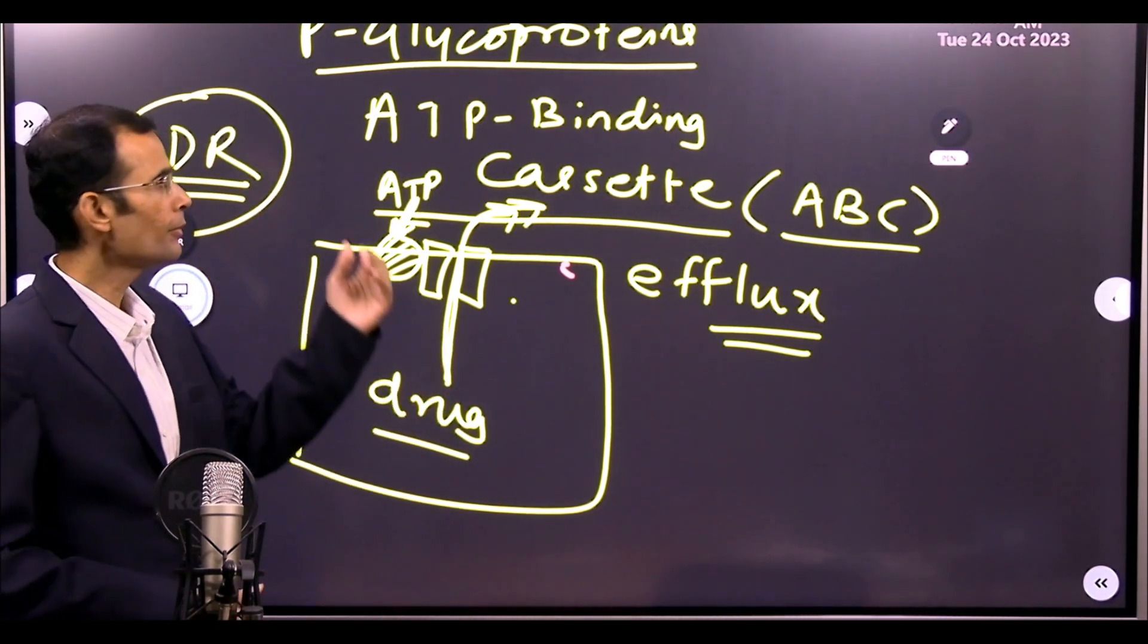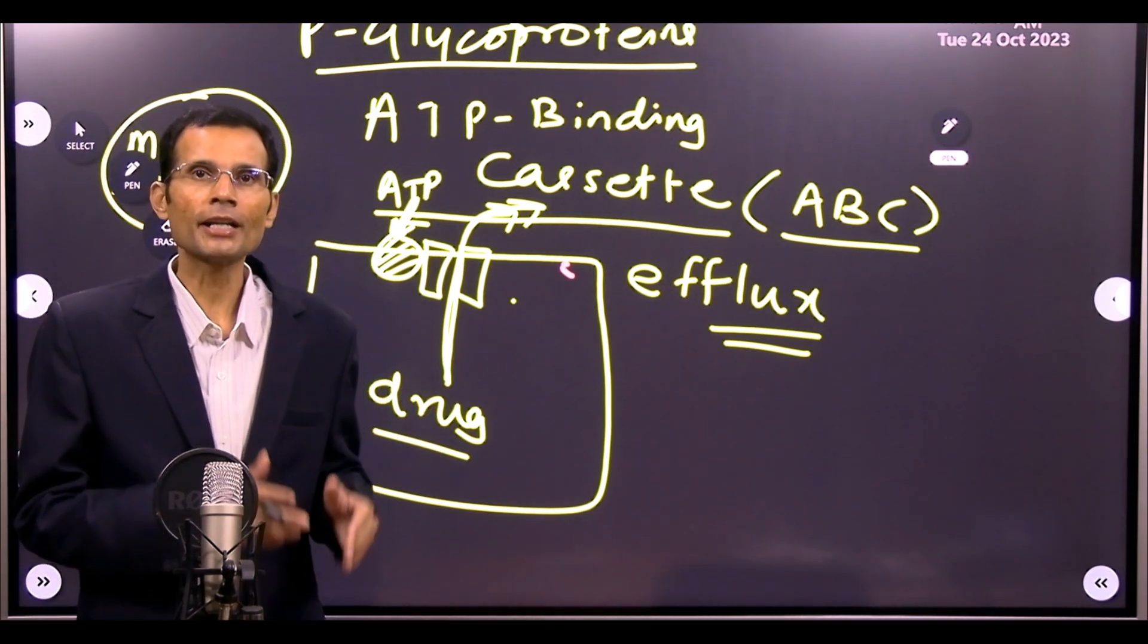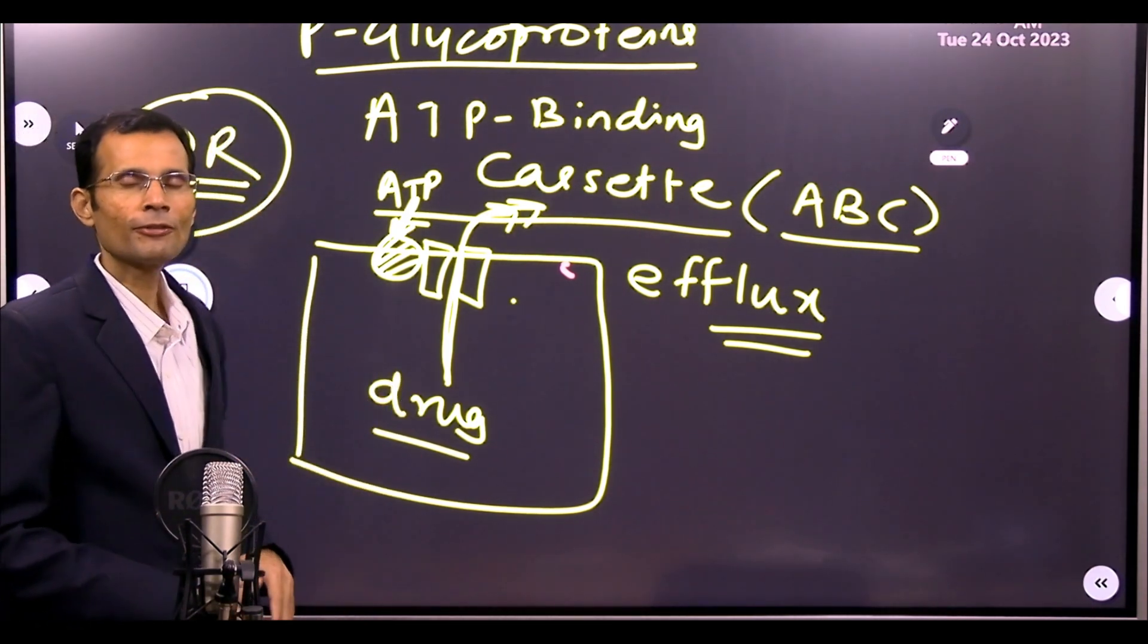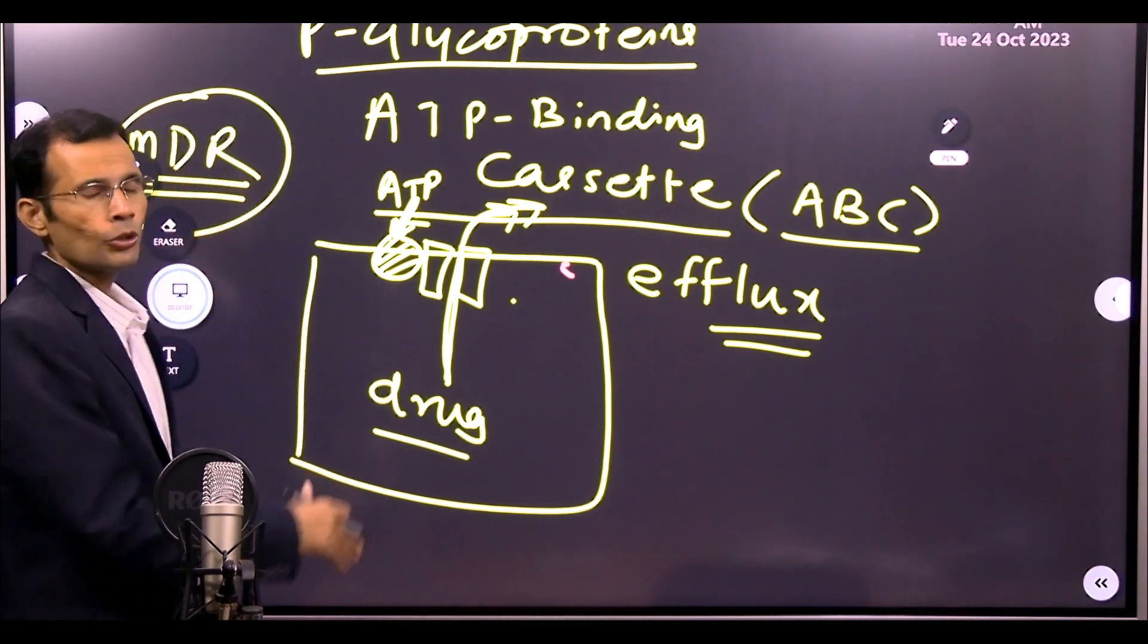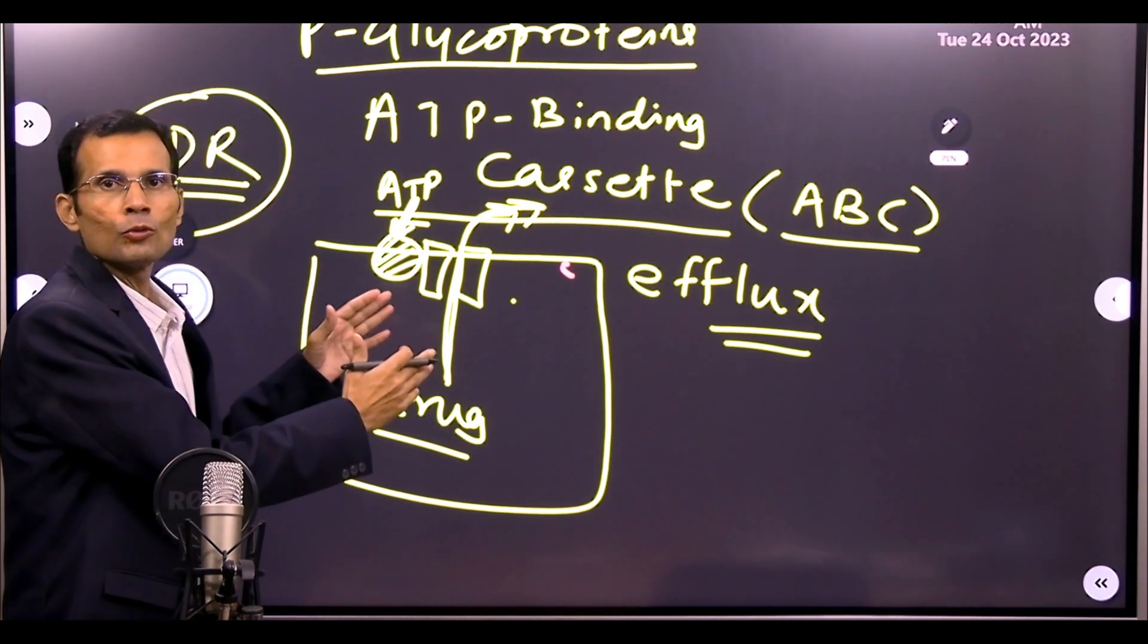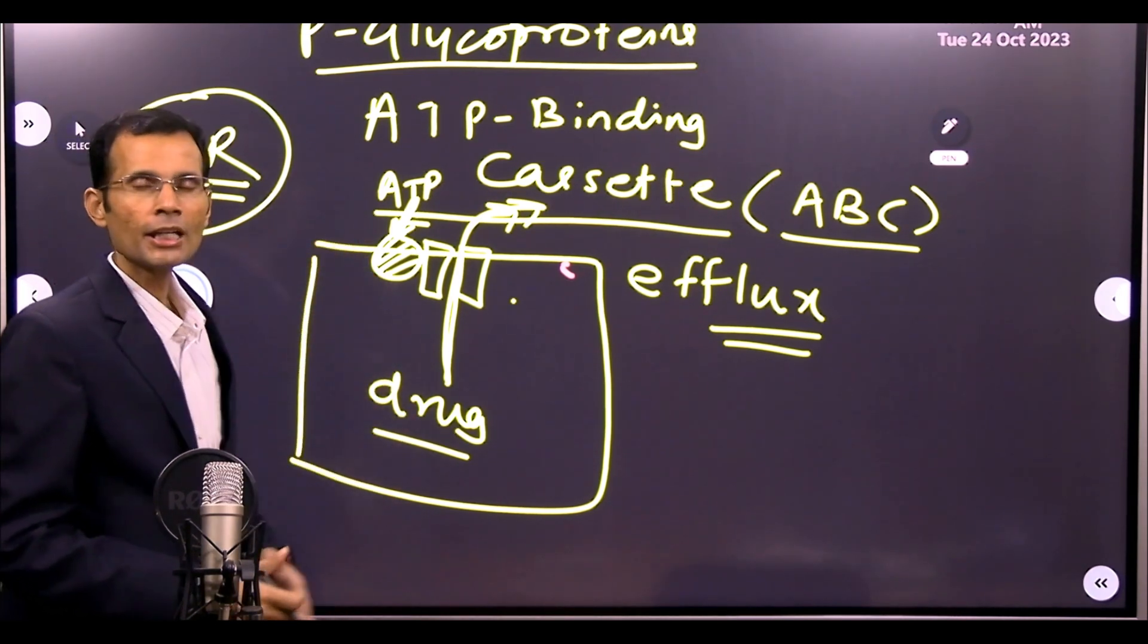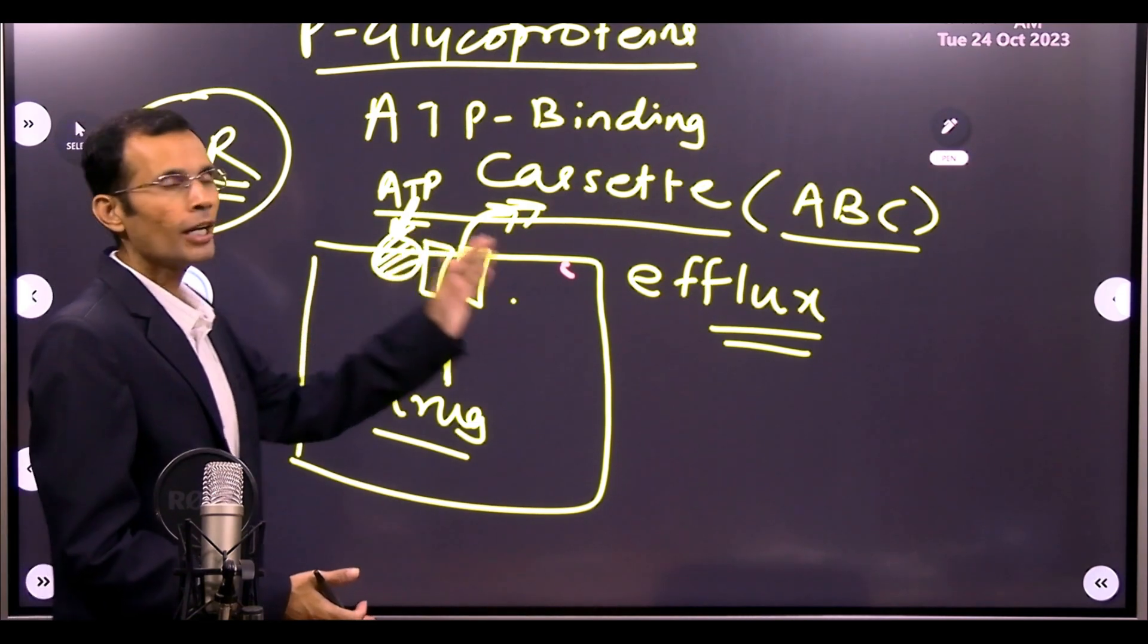That's different from these ABC or ATP binding cassette transporters. They have been found to have at least four domains. There will be one part to which the ATP will bind, and ATP hydrolysis will provide that energy to the other part.